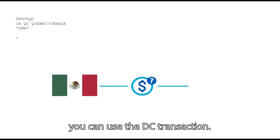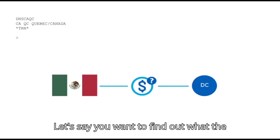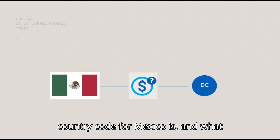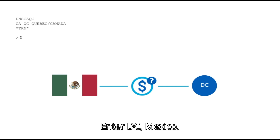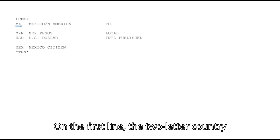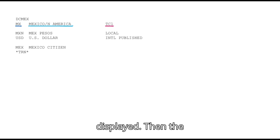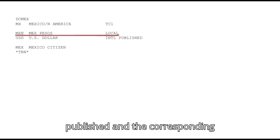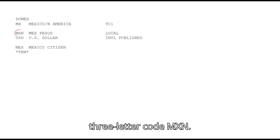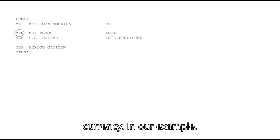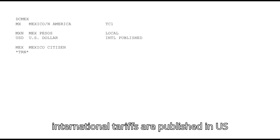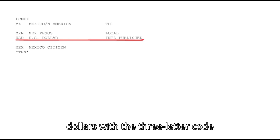If you'd like to encode or decode a country or have more information on it, you can use the DC transaction. Let's say you want to find out what the country code for Mexico is and what currency is in use there. Enter DC Mexico. On the first line, the two-letter country code, country and region, and the IATA area it falls under are displayed. Then the local currency in which tariffs are published and the corresponding three-letter code MXN. Some countries publish their international tariffs in a different currency. In our example, international tariffs are published in US dollars with the three-letter code USD.